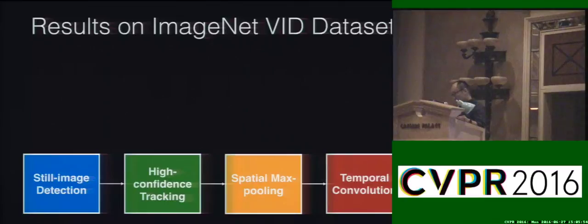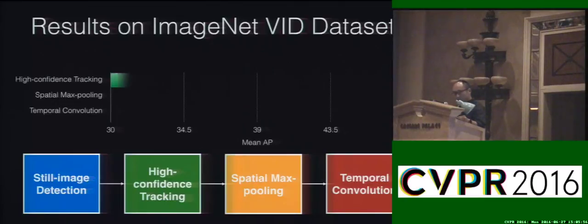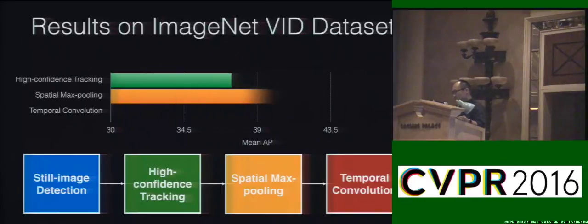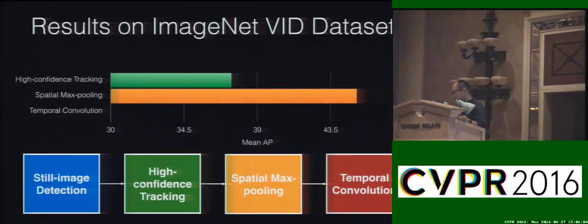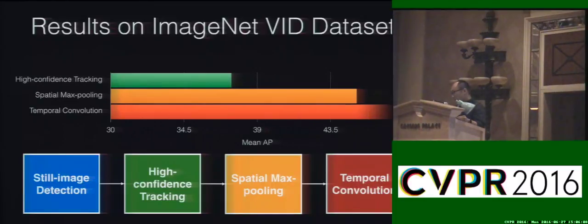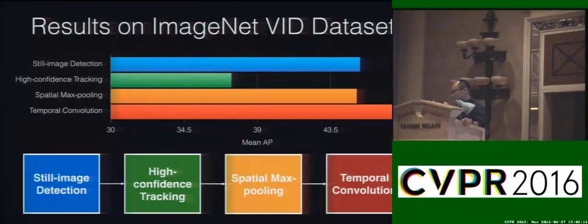We evaluate our framework on the ImageNet VID dataset. Directly using still image detections on the tracking results gives only 37% MiAP. Adding spatial max pooling increases this to 45%, and adding temporal convolution further increases it to 47%, which is about a 2.2% increase compared to still image detections directly.